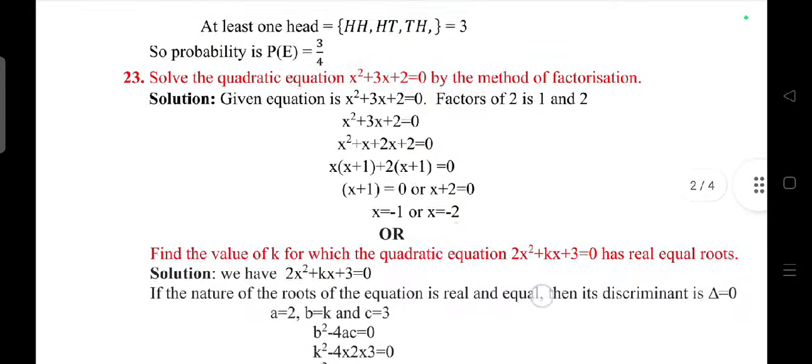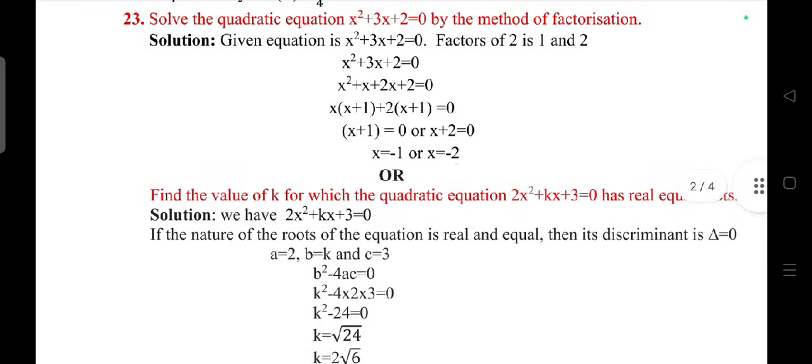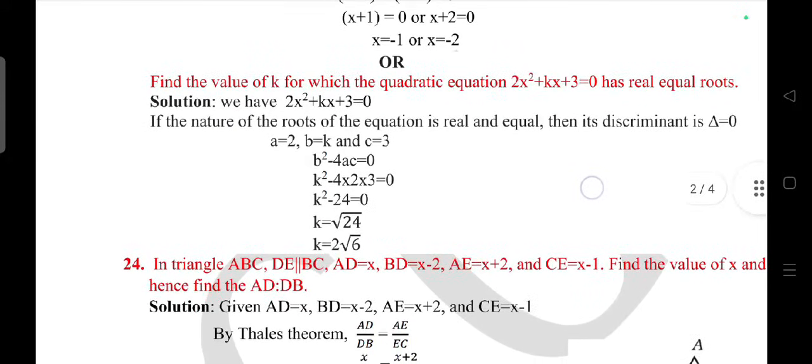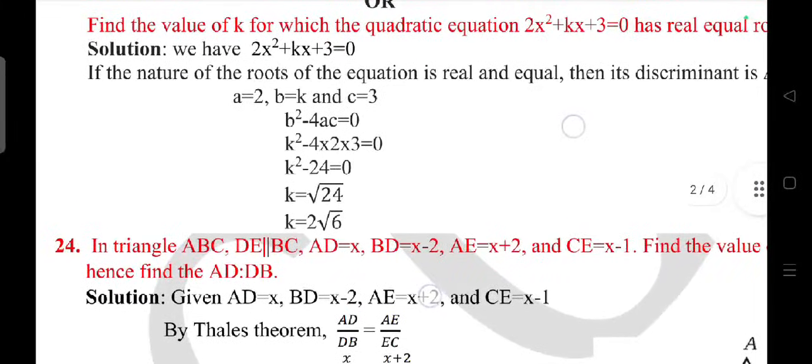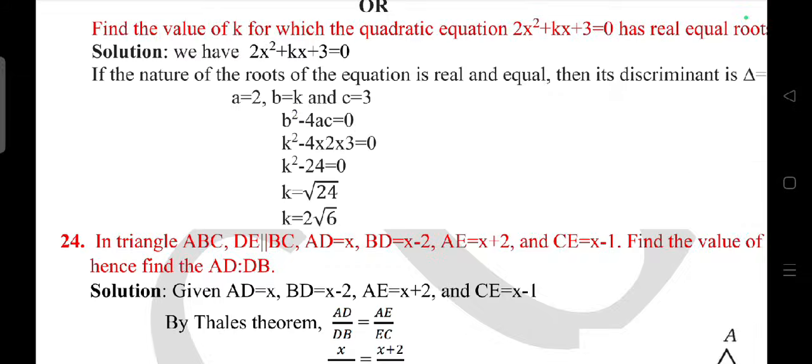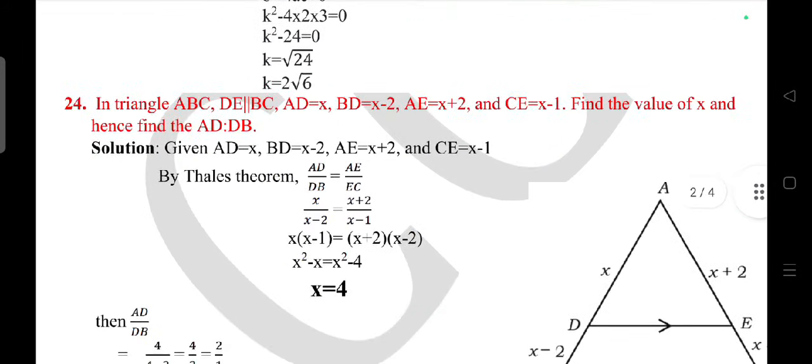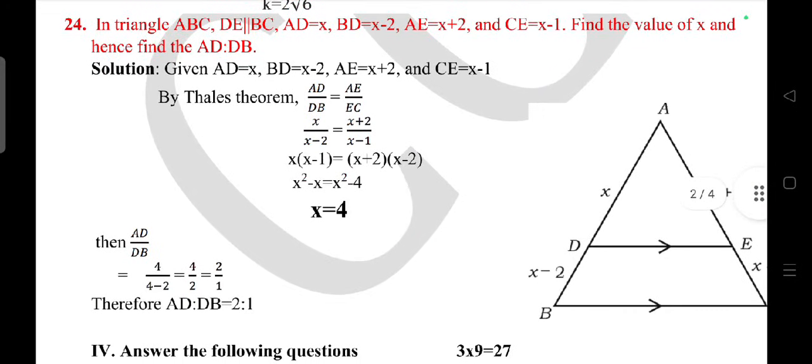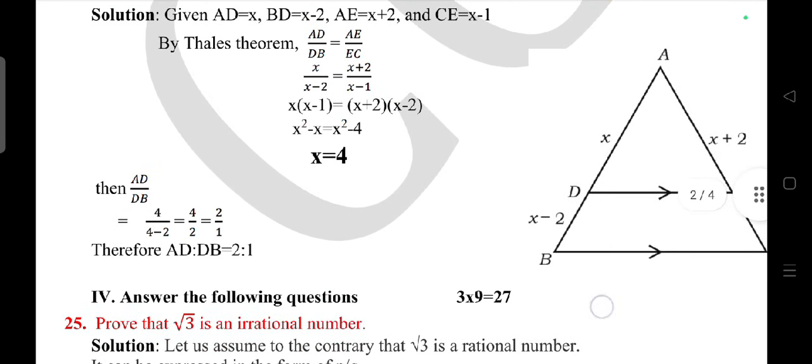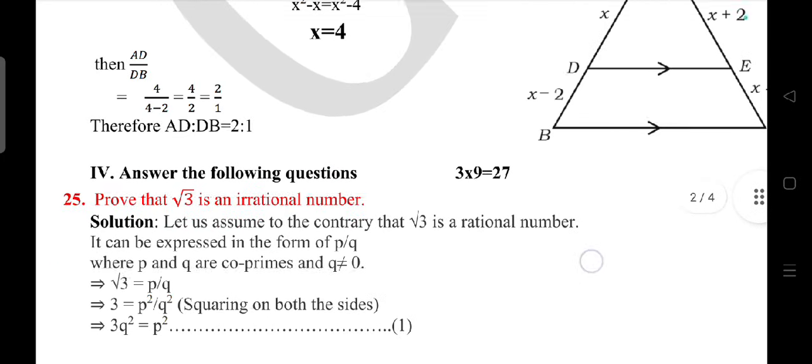If a coin is tossed twice, find the probability of at least one head: 3 by 4. Solve the quadratic equation by factorization method, then find the value of k for which quadratic equation has real equal roots. B square minus 4AC, put k value, you will get k value 2 root 6. In triangle ABC, DE parallel to BC, and AD equals x, BD equals x minus 2, AE equals x plus 2, CE equals x minus 1. Find the value of x and AD by DB.